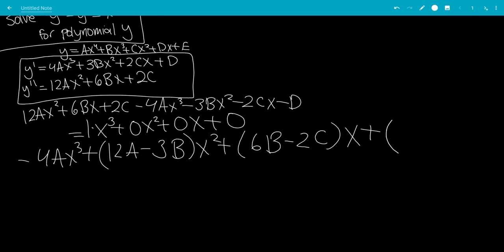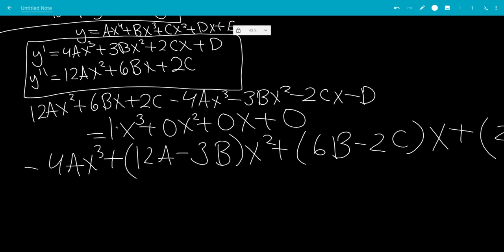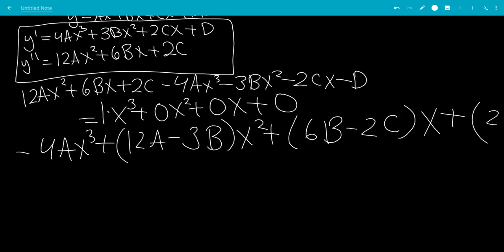Now let's do the x terms together. So that would just be 6b, then minus 2c times x. And then finally, for the constant term, this would just be 2c minus d.